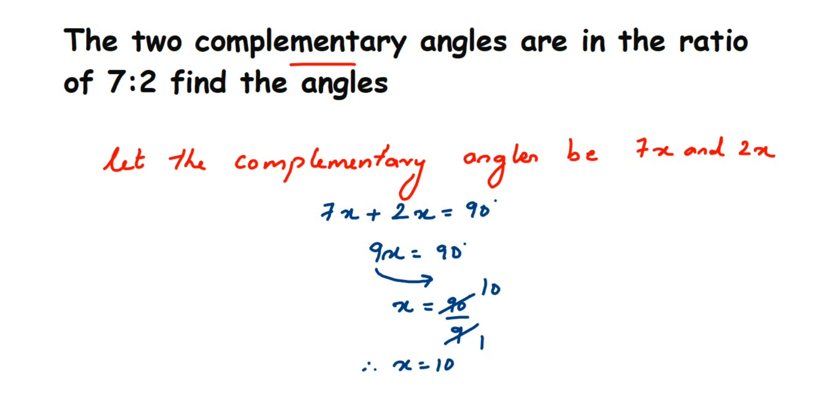Now this is only the x value, now we have to find out the angles. The first angle was 7x, right? So 7x will be equal to 7×10 which is equal to 70 degrees. Next we have 2x, so it will be 2×10 which will be equal to 20 degrees. Now you can cross check your answer - you can add 70 and 20, you can see that you will get 90 degrees, which means your answer is correct here.